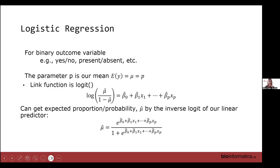To get the actual estimated probability, we use the inverse logit. By solving for mu, we get e to the linear predictor over 1 plus e to the linear predictor as our predicted probability once we have those estimated beta coefficients.